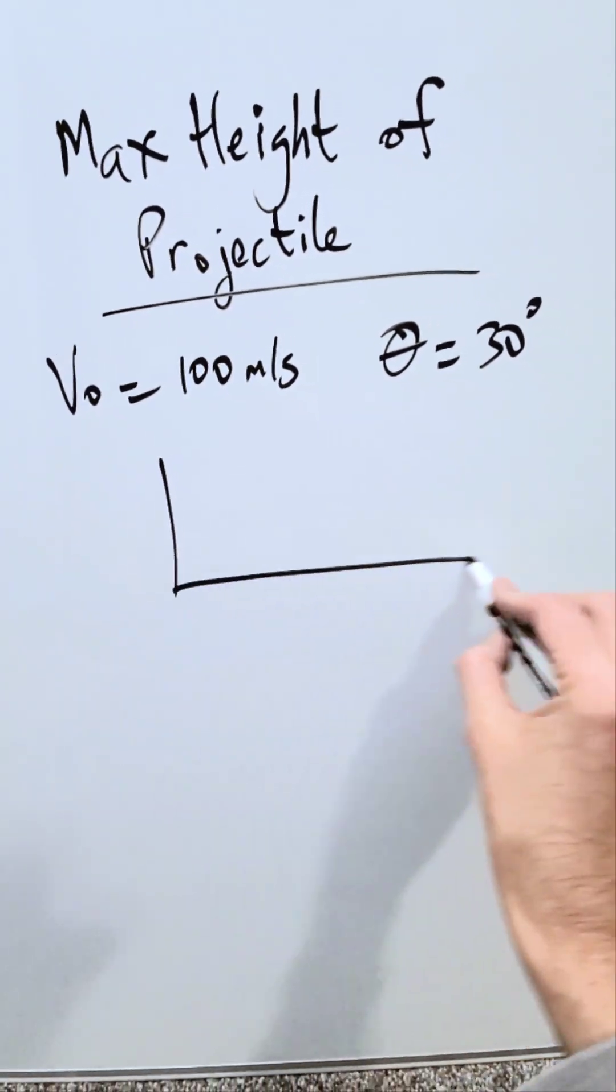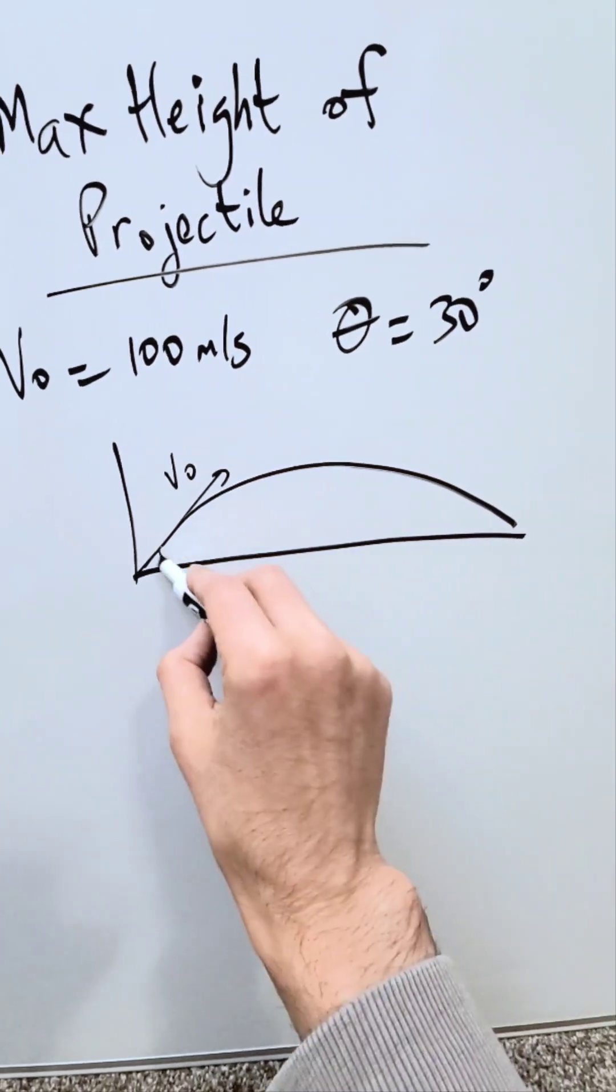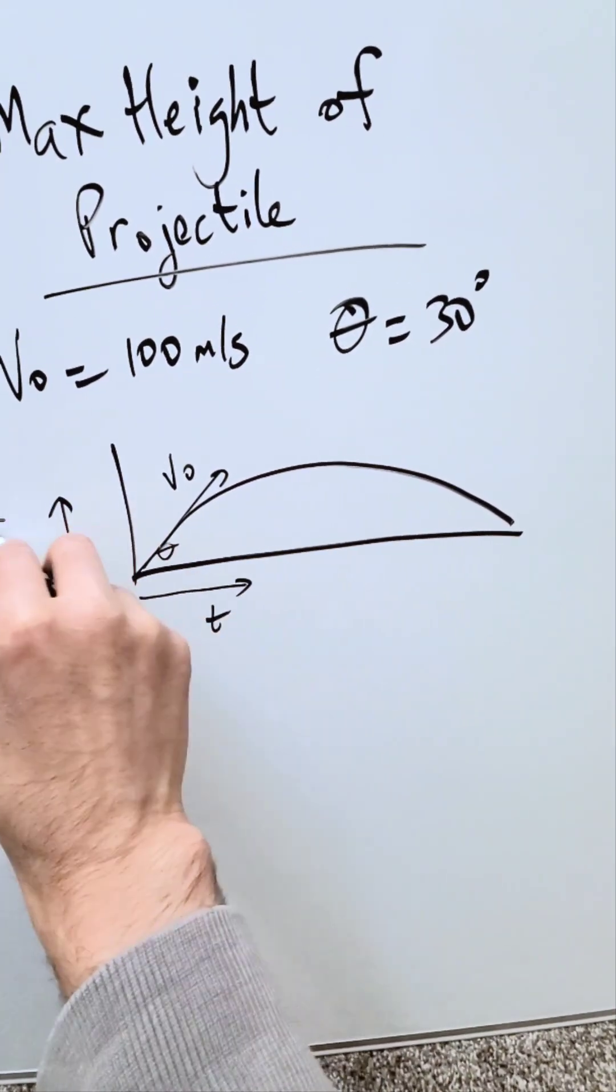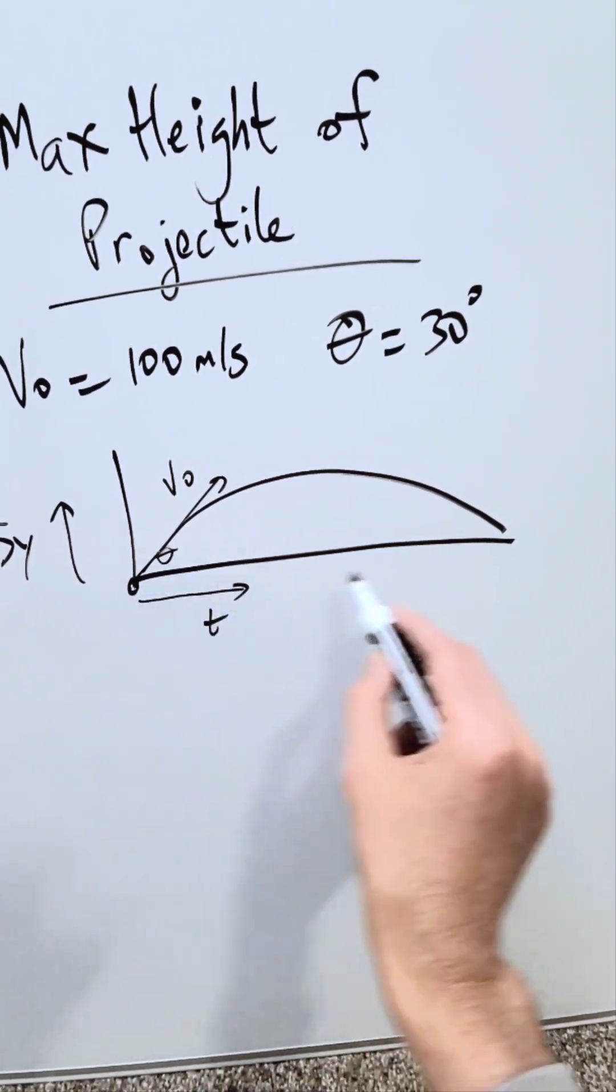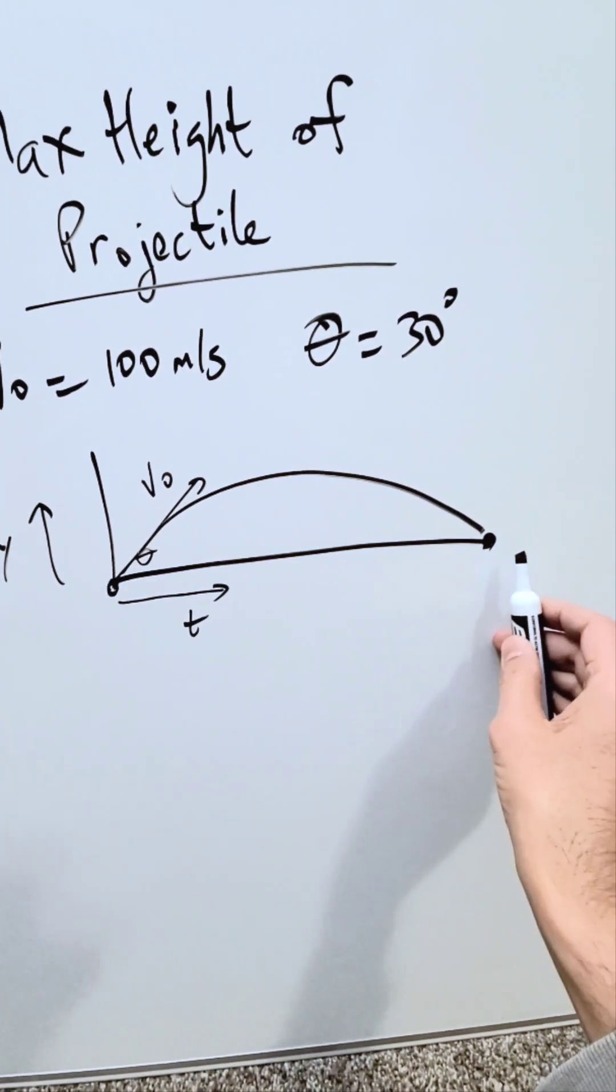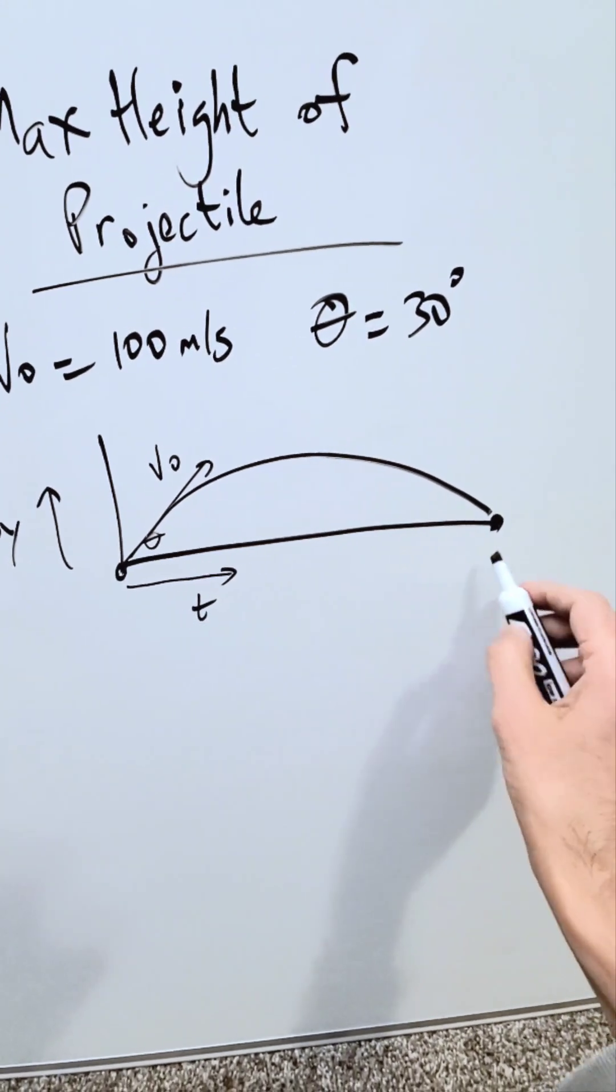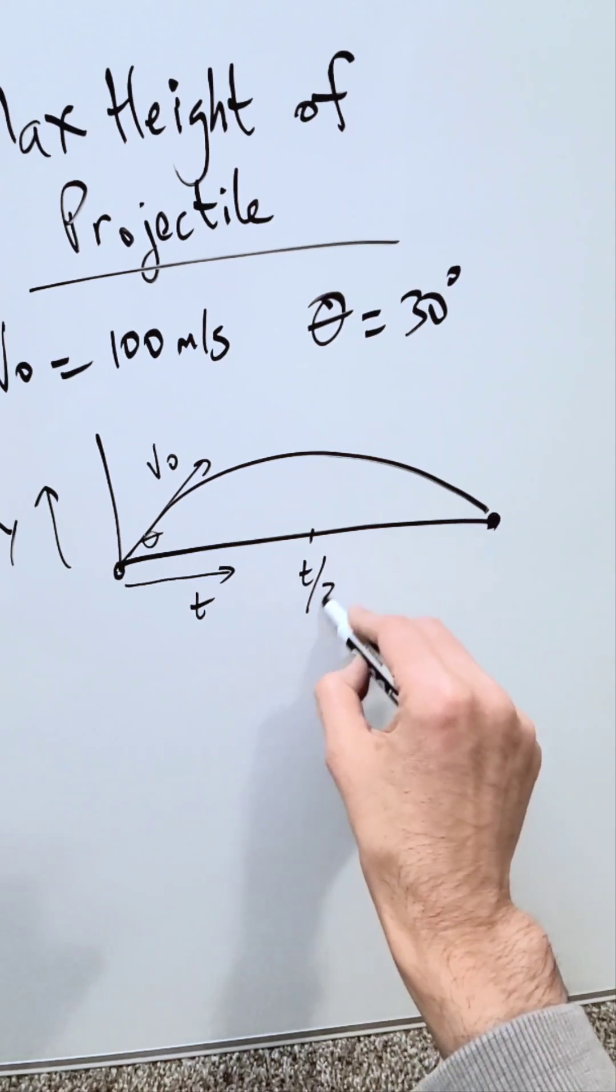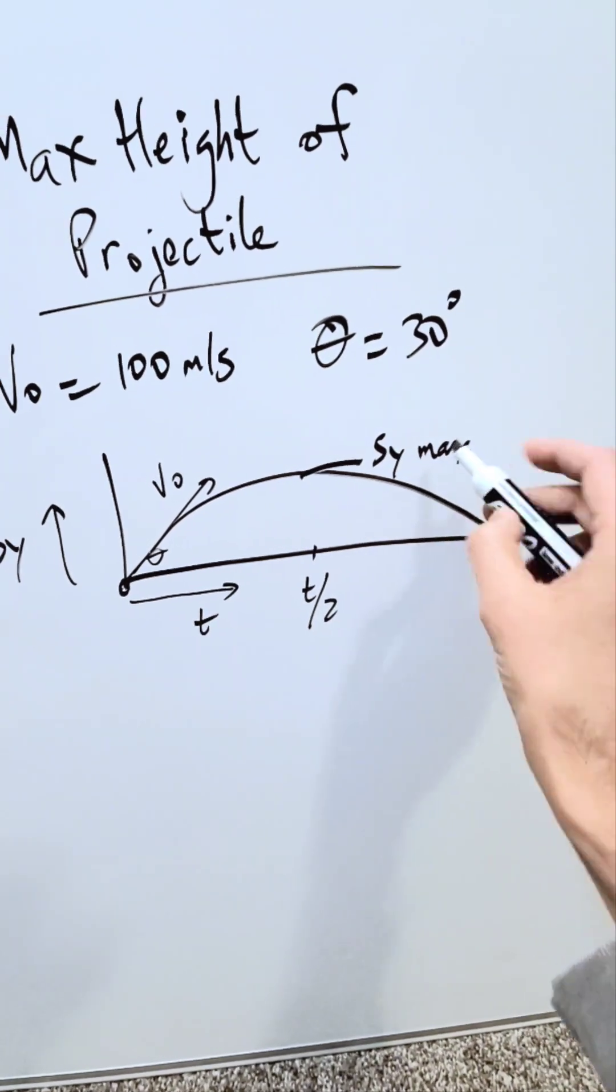Looking at this object shot with initial velocity, it's going to undergo a projectile motion that looks like this with a certain angle. Here is my time and here is my displacement along the vertical axis. At time 0, you have no displacement. At time maximum when the object lands, the displacement is 0 again. Somewhere between this end and start, there's a middle point, time over 2.